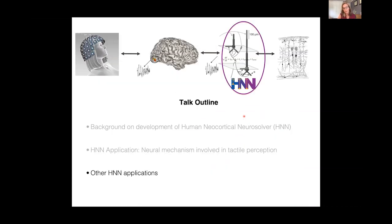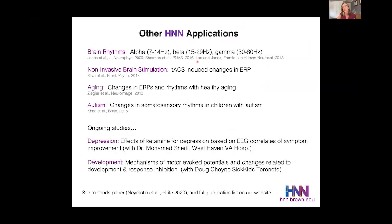In the last minute, I want to briefly describe some other applications of HNN. Beyond beta rhythms, we've also used the model to study the origin of alpha rhythms and gamma rhythms, the impact of non-invasive brain stimulation on brain dynamics measurable with EEG, and changes in ERPs and rhythms with healthy aging. Other groups have used the model to look at changes in somatosensory rhythms in children with autism. We have several ongoing studies looking at EEG changes with depression and changes with development in the motor system.